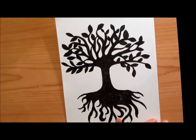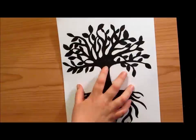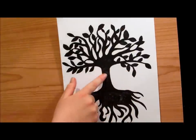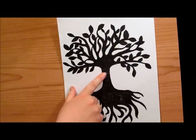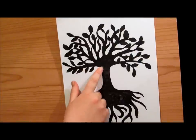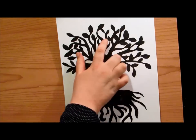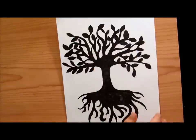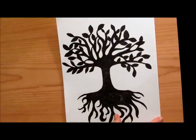So this is one that we've done where the positive space, which is the black, is one continuous line. Every shape is connected to another, there's no free-floating shapes.